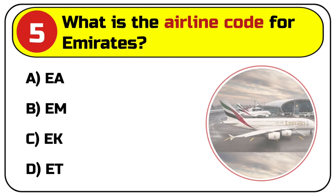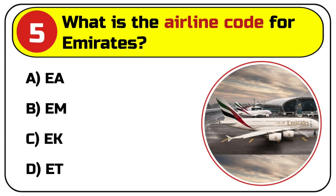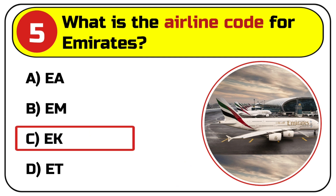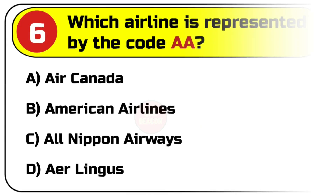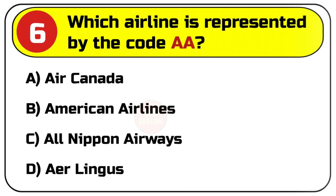Question number five: what is the airline code for Emirates? Options are A. EA, B. EM, C. EK, D. ET. Correct answer is C. EK.